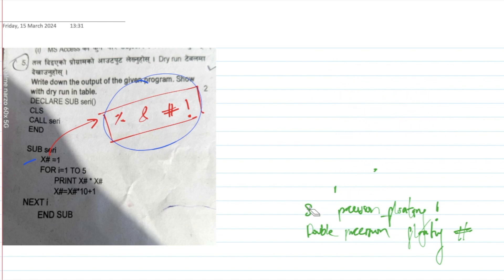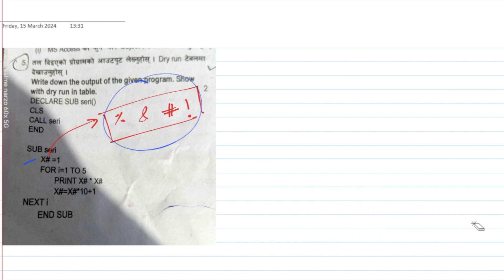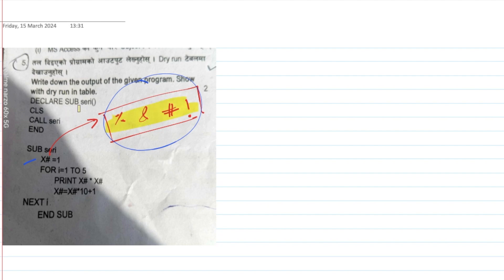We need to know this concept. If you have a number, you can add the appropriate symbol — integer with percentage, long integer, single precision floating number, or double precision floating number — by adding the corresponding symbol to the variable.